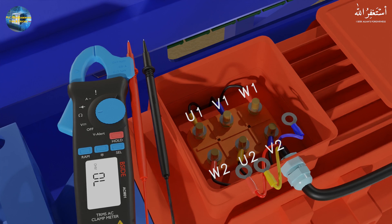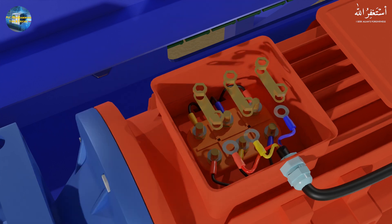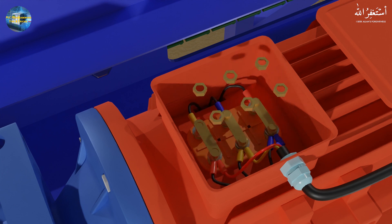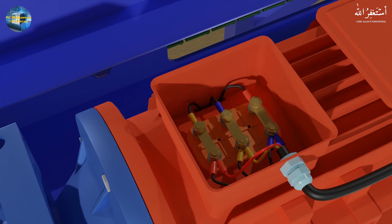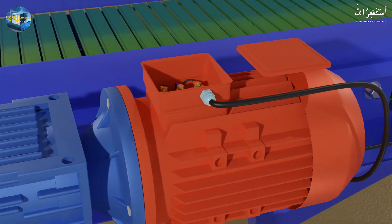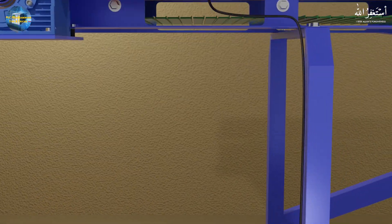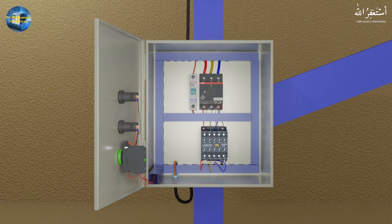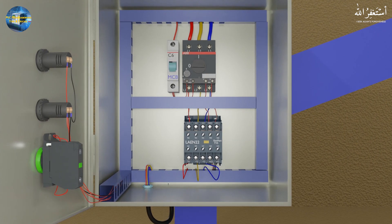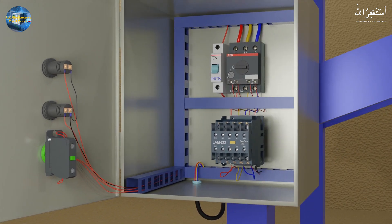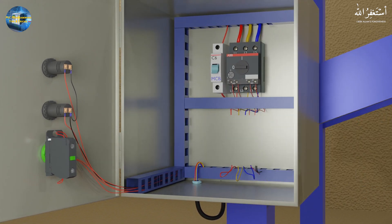Now we have confirmed that the motor side is okay — there is nothing wrong with the motor winding. So we will connect all the windings back to the motor terminals. Next, we will go back and check the contactor, as one of its contacts may not be passing current to the motor winding coil, causing the current imbalance across the motor windings.